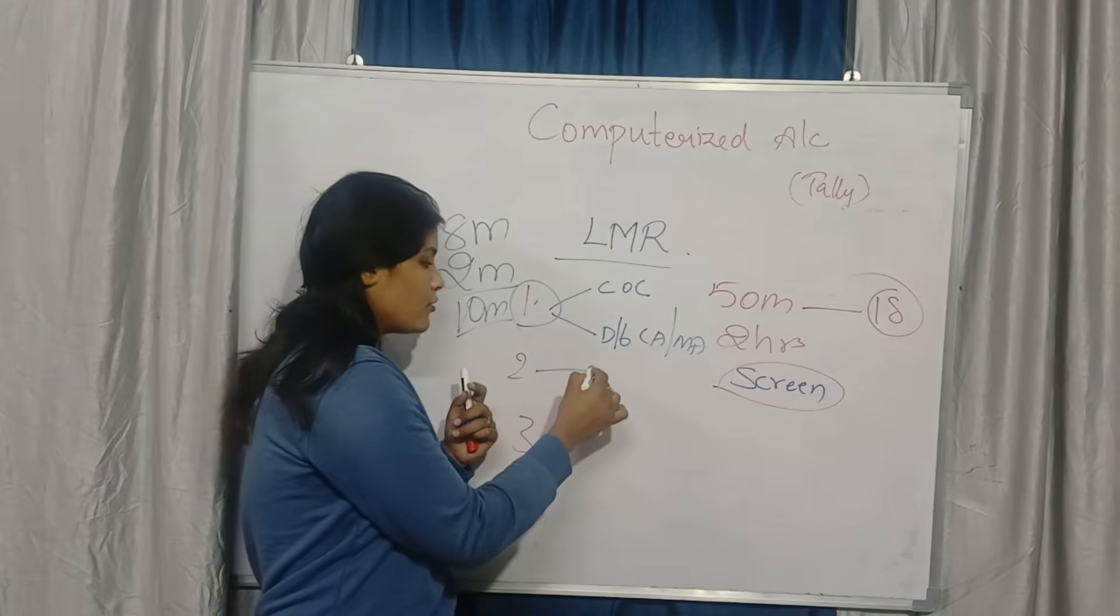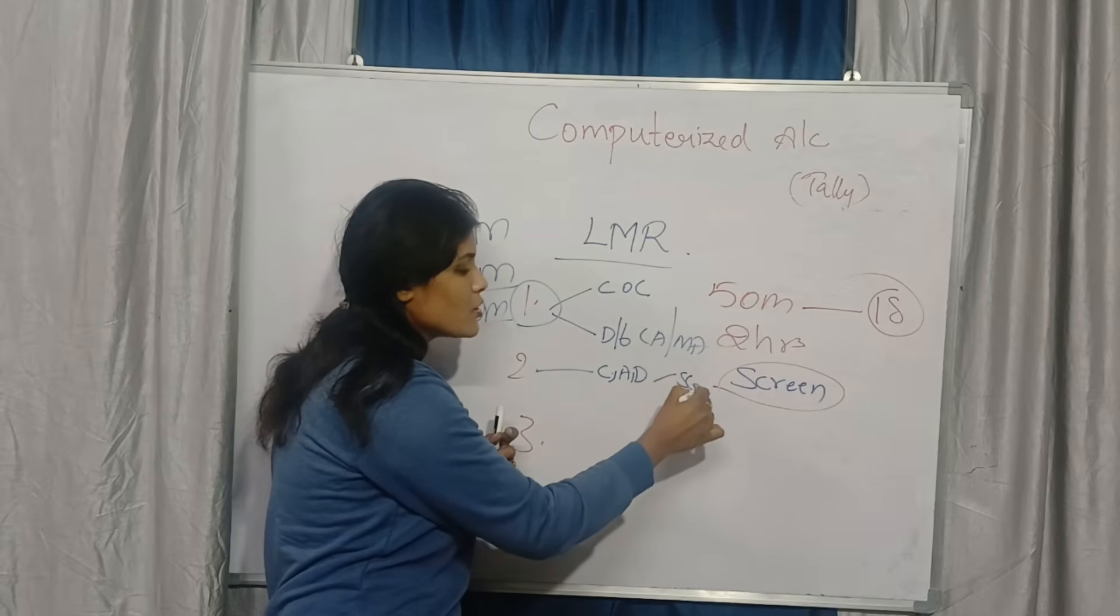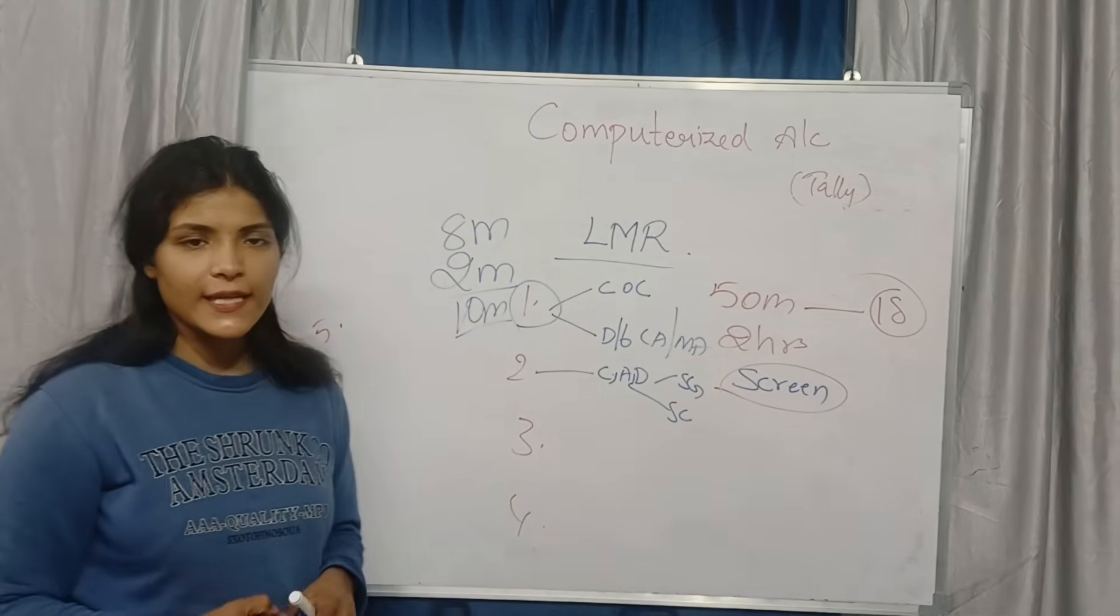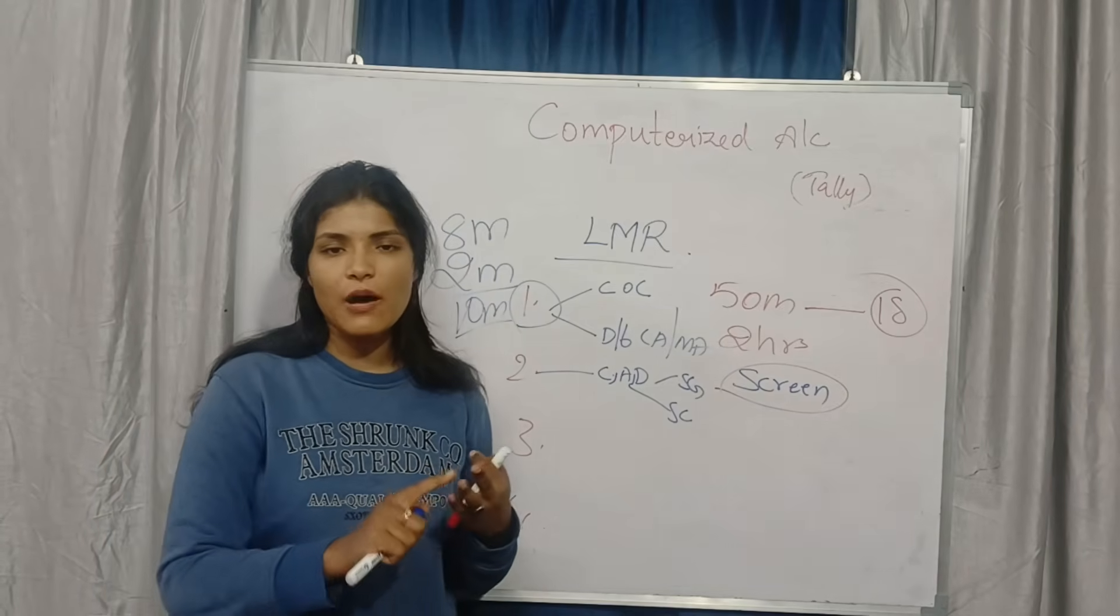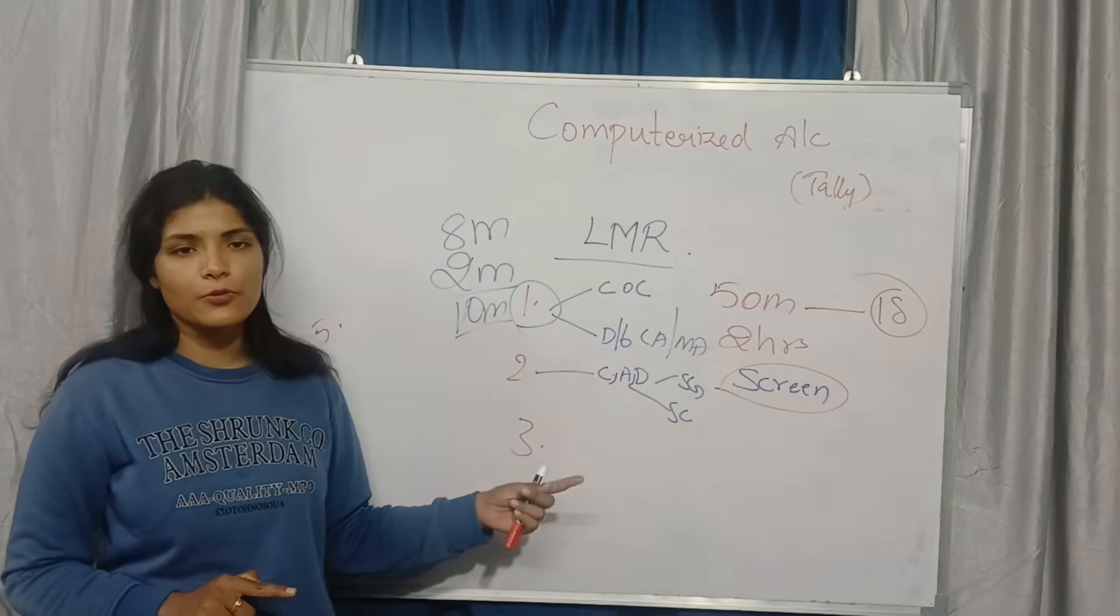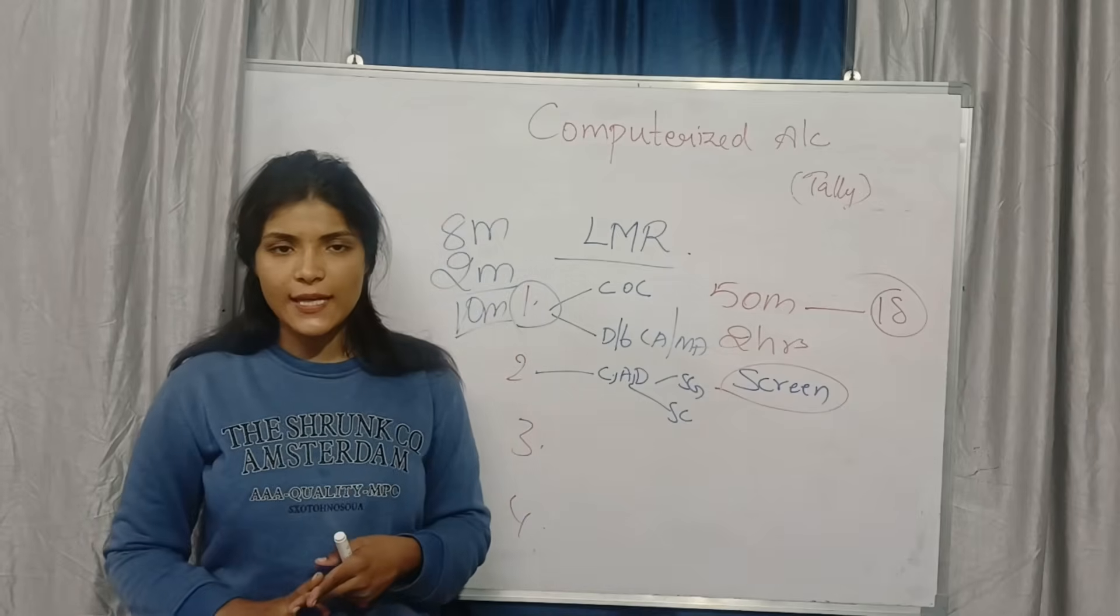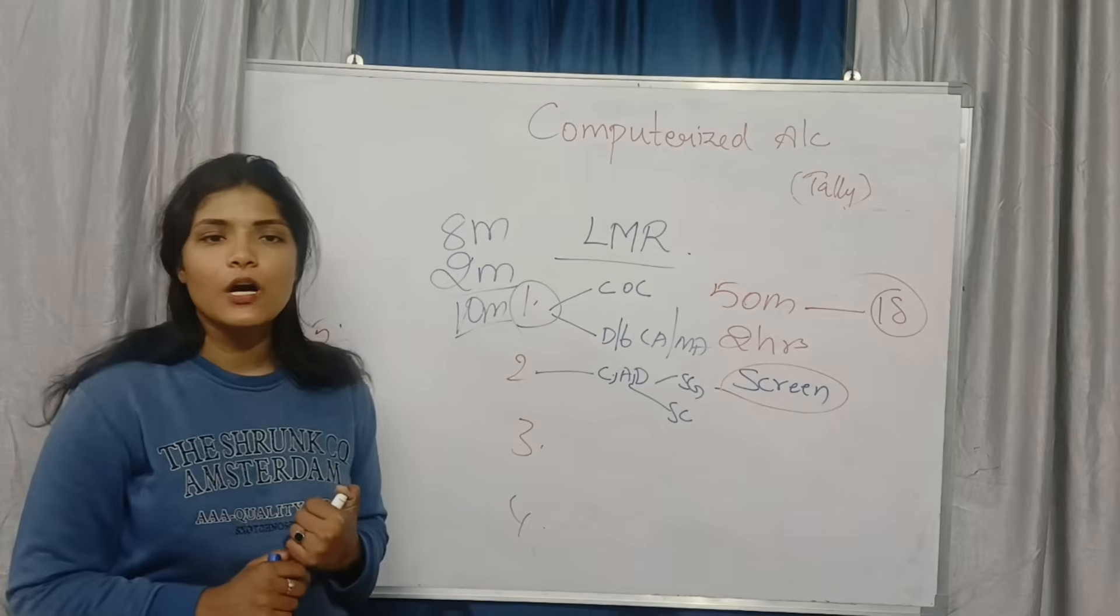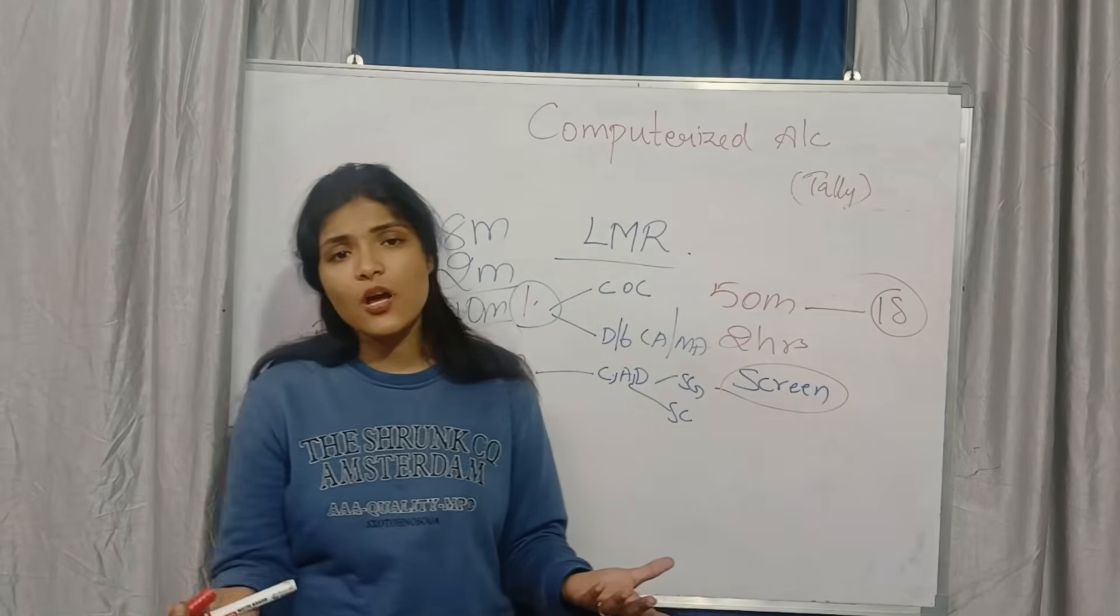Now second unit: creation, alter, display of stock groups and stock categories. Stock groups and stock categories, how you need to create, how you need to alter, how you need to delete. If you have learned this stock groups and stock categories, you can attempt unit number 2. Either they may ask stock groups or stock categories. Inventory info is nothing but stock groups and stock categories.